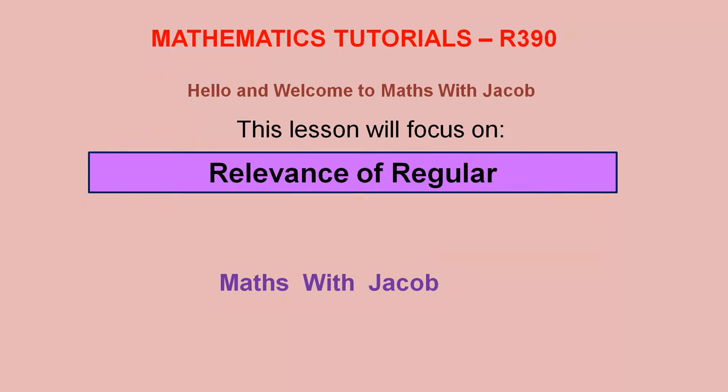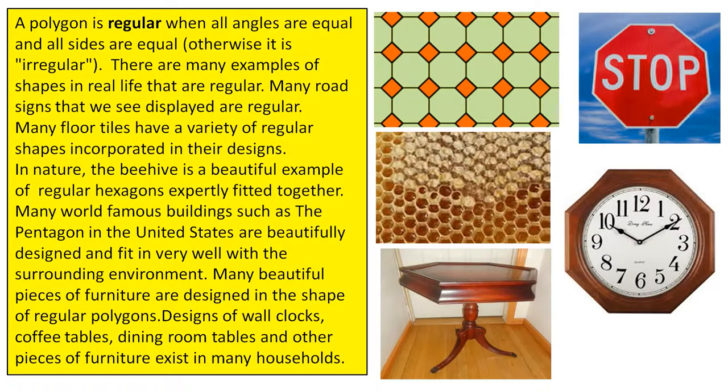Hello and welcome to Maths with Jacob. This lesson will focus on relevance of regular polygons. A polygon is regular when all angles are equal and all sides are equal, otherwise it is irregular.